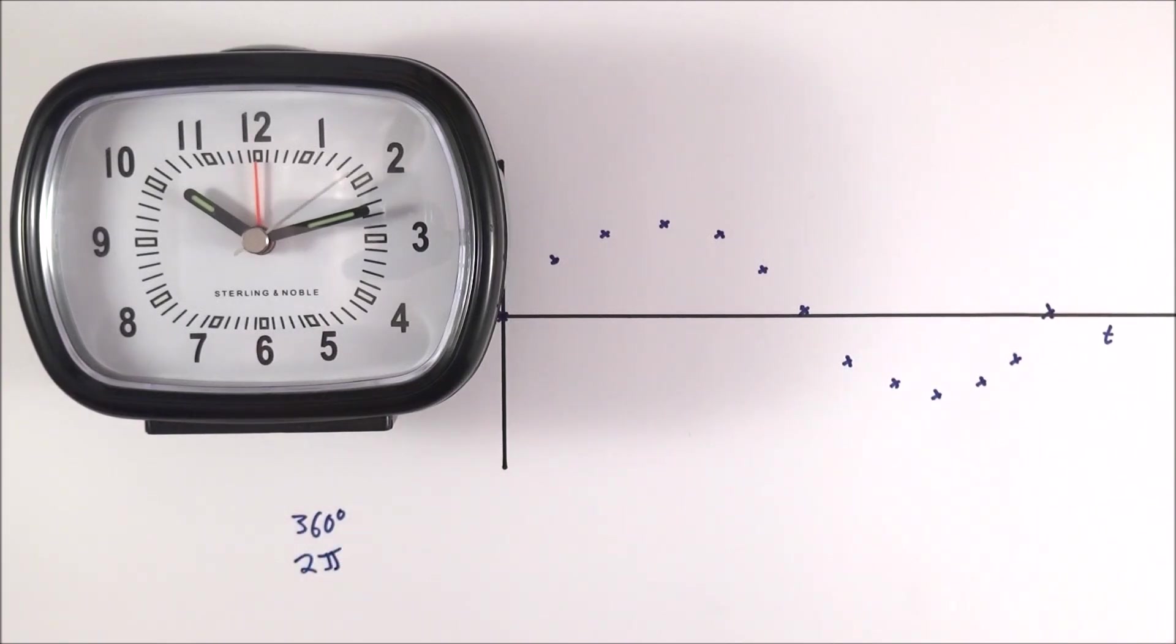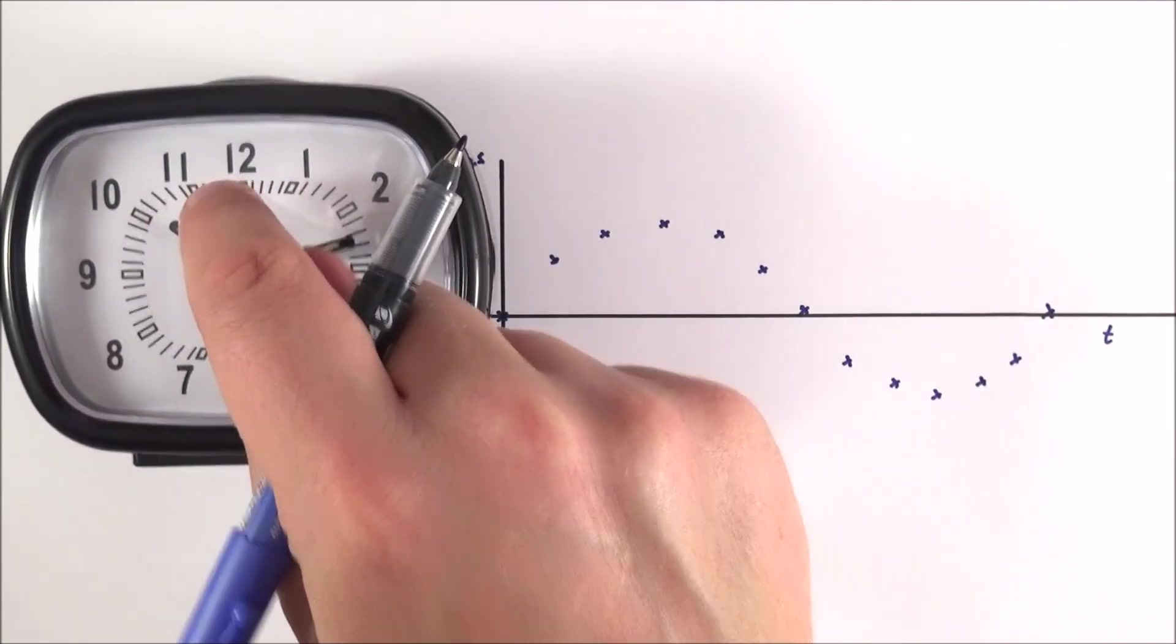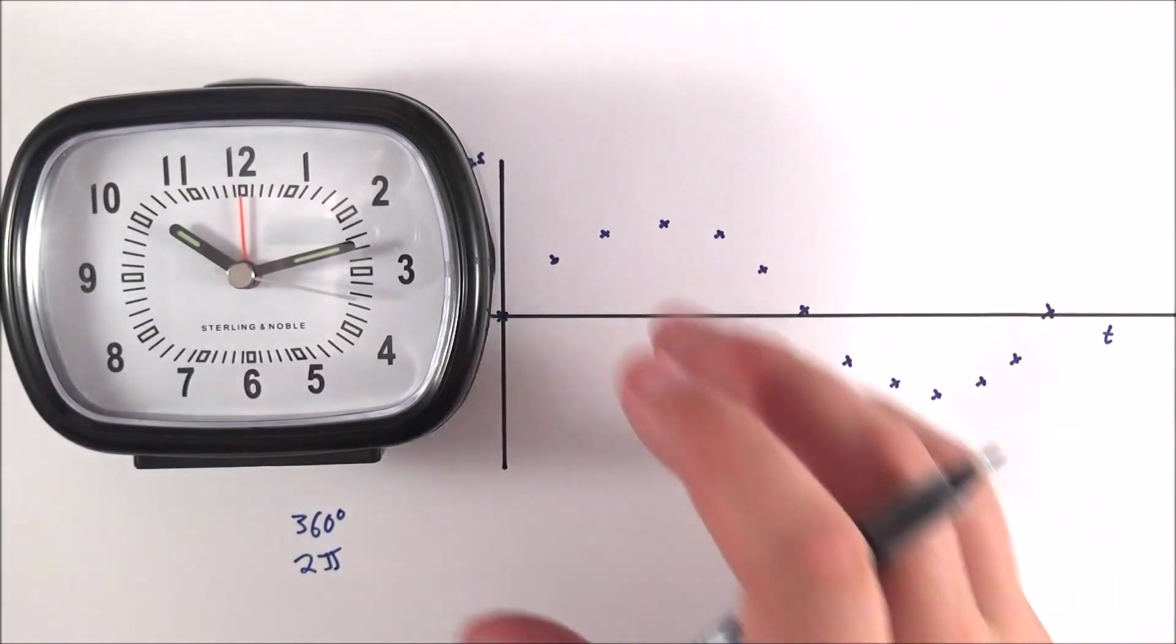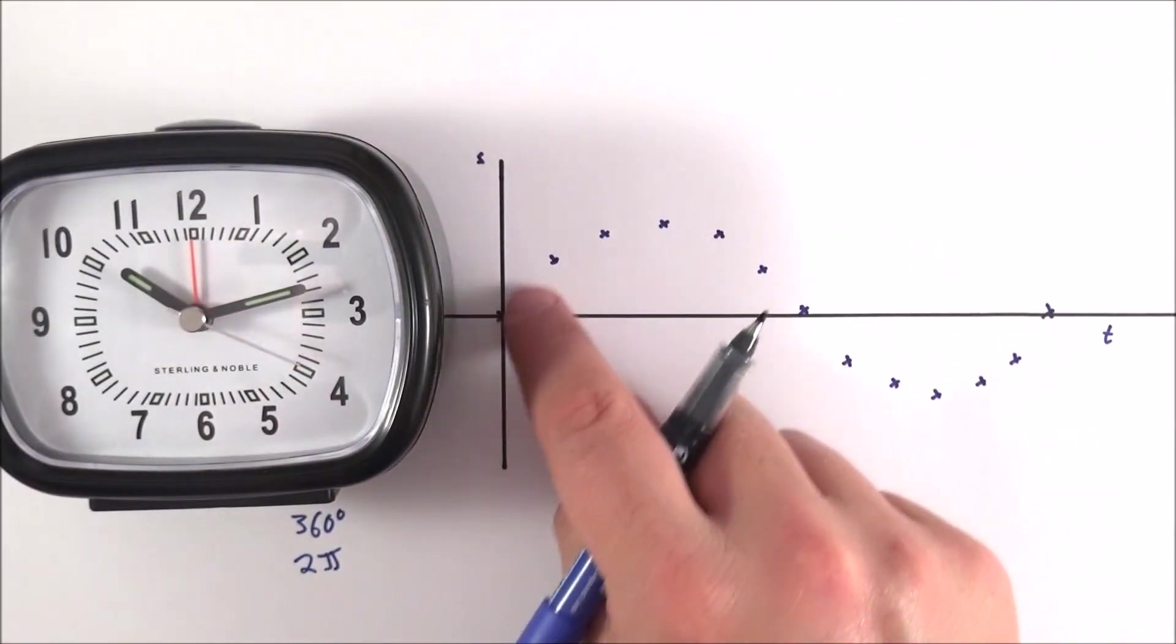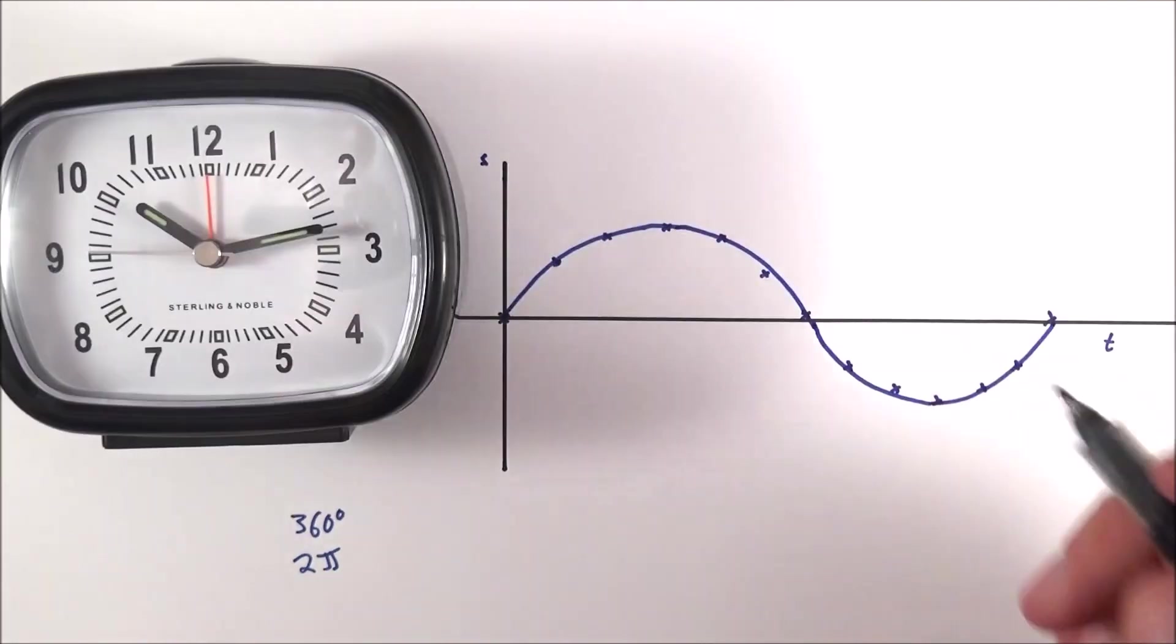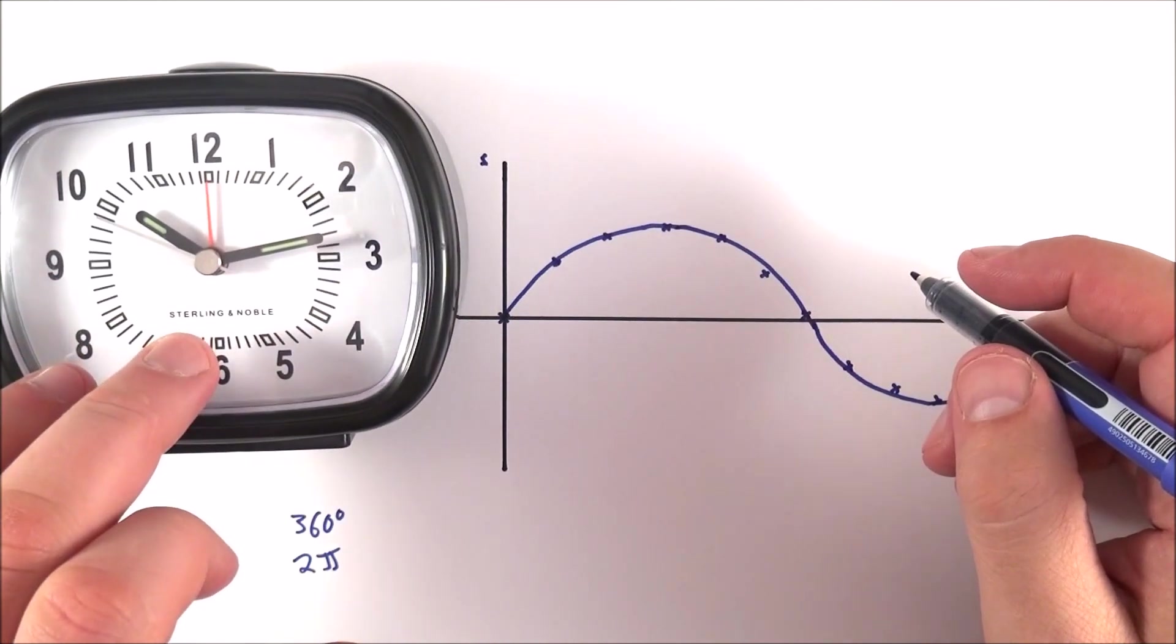There's a big link between things which move in a circular path and things which move with this regular kind of oscillation. In this case, what we can actually get here is a lovely sine curve, and what we can do is just like we have things moving in a circular path.